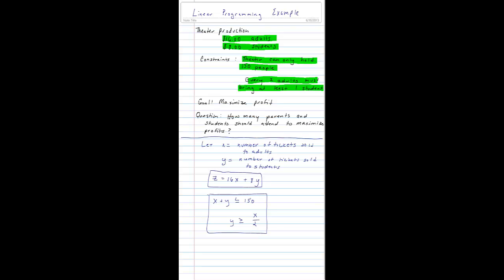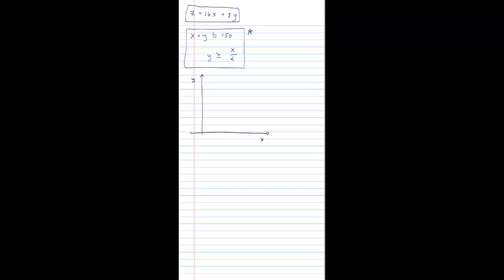We're going to use the constraints in terms of a graph. So let's go ahead and do that. And I've gone ahead and started on a new piece of paper. Here's my x-y graph. Now notice I'm only looking at quadrant 1. That's because I'm only going to sell positive tickets for adults and positive tickets for students. So I'm only looking in quadrant 1. Let's graph my first equation. I have x plus y is less than or equal to 150.